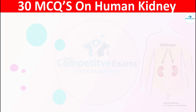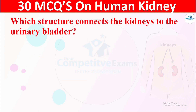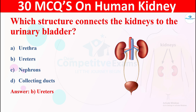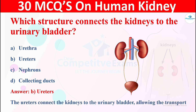Question 28: Which structure connects the kidneys to the urinary bladder? Options are: A) urethra, B) ureter, C) nephrons, or D) collecting ducts. The right answer is ureters. The ureters connect the kidneys to the urinary bladder, allowing the transport of urine.